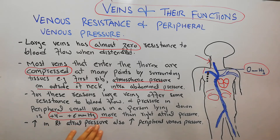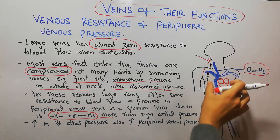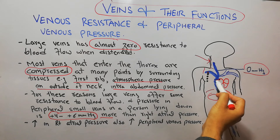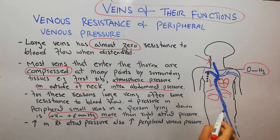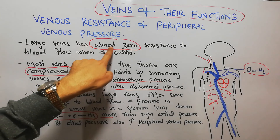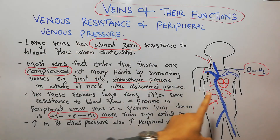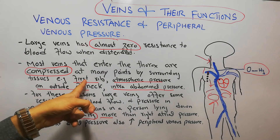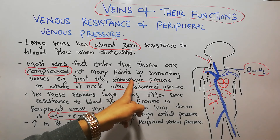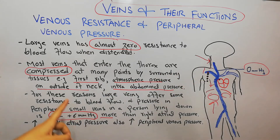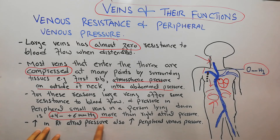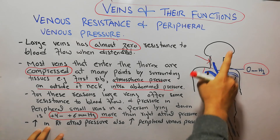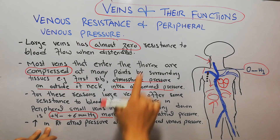An increase in right atrial pressure also increases peripheral venous pressure. If the pressure in the right atrium increases due to heart failure or some other abnormality, it will reduce blood flow and the pressure in the veins will increase. So the large veins normally have almost zero resistance, but the resistance they do offer is due to compression at the first rib, atmospheric pressure in the neck, abdominal viscera in the abdomen, and increased atrial pressure from cardiac abnormalities.